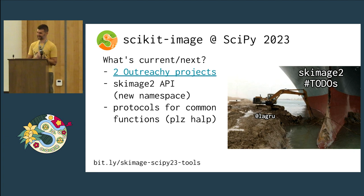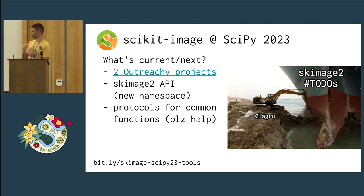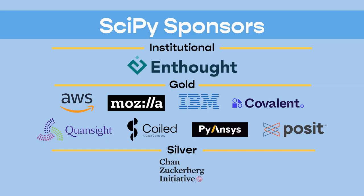We're doing two high-priority projects, which are really good, and we're working on a new API. Since you can't break anything, it's going to be a new namespace: skimage2. The idea is to have protocols for very common functions — for example, a segmentation function takes in an image, some other parameters, and produces a label image. We want to use PEP protocols for this, though there are some quirks around them, so if you're really into typing, please help us. Lars Greeter is primarily funded by CZI OSS and is hacking away at the skimage2 thing. If you want to help out, we would super appreciate it.